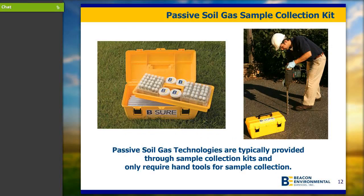With our passive soil gas samplers, we send them out in easy-to-use toolboxes with a handle to carry around the site. Beacon sends them out custom-prepared with the number of samplers needed for your site. The toolbox is about 20 by 10 by 10 inches — very small, compact, and easy to use. The kit contains all the materials needed to collect your samples, except for what you use to create the holes, whether a hammer drill with drill bits, a slide hammer, or an auger.